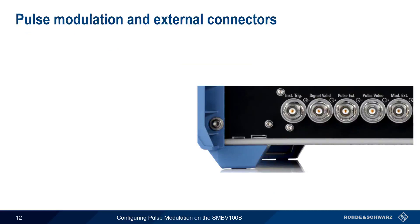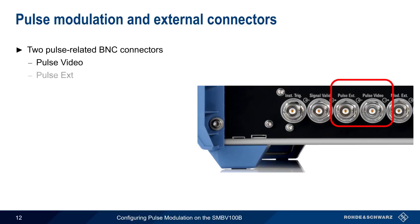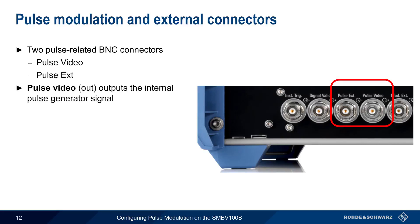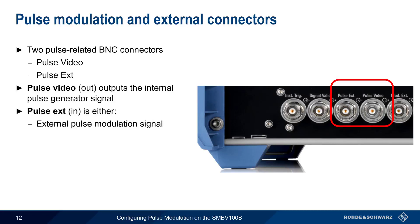On the SMBV100B, there are two BNC connectors related to pulse modulation: Pulse Video and Pulse External. Pulse Video outputs the internal pulse generator signal. Pulse External has two purposes: it can take the input of an external pulse modulator, or receive an external trigger or gate signal.